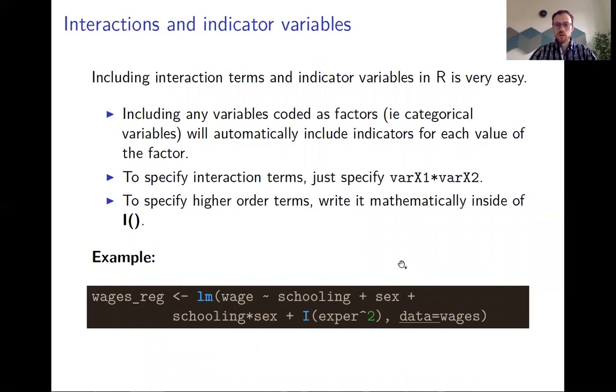If you want to include interaction terms, you can of course always do that by generating extra variables and including them into your regression. However, the proper way of doing it is by using the I function, in which inside you just call the mathematical expression. For example, if you'd like to include experience squared, you do this inside this I function. If you just do it without, then it will not work.